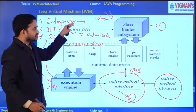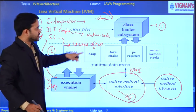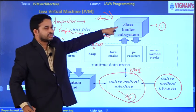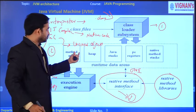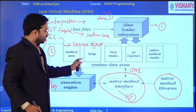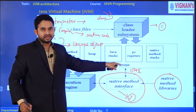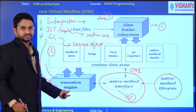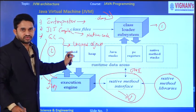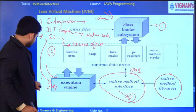So the entire JVM architecture contains three parts: the class loader subsystem, the memory area (also called the runtime data area), and the execution engine. This completes our topic of JVM architecture.